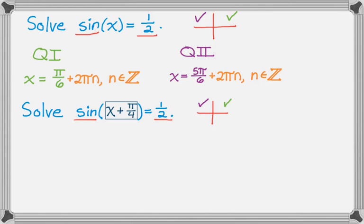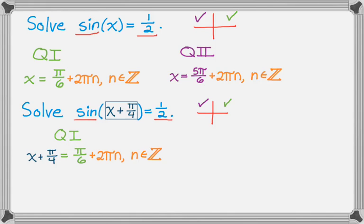I think of the argument as something in a box. Whatever is in the box — x plus pi over 4 — can be that angle from quadrant 1, so it could be pi over 6 plus 2 pi n. To solve for x, I subtract pi over 4 from both sides. Pi over 6 minus pi over 4 is 2 pi over 12 minus 3 pi over 12, which is negative pi over 12. And then it's still plus 2 pi n.